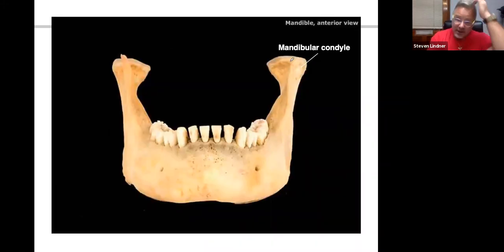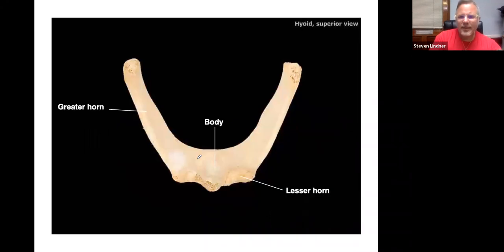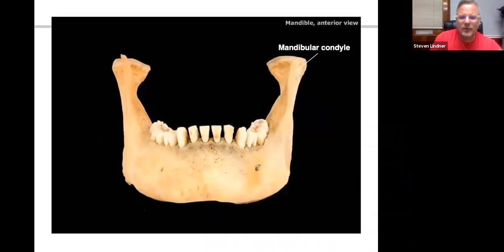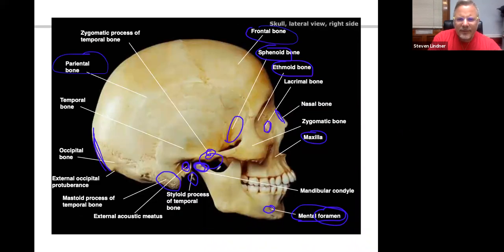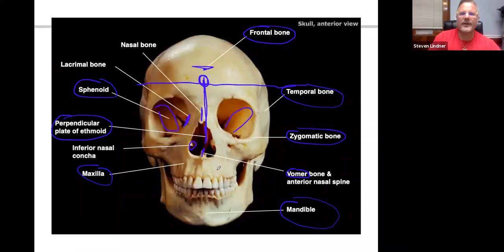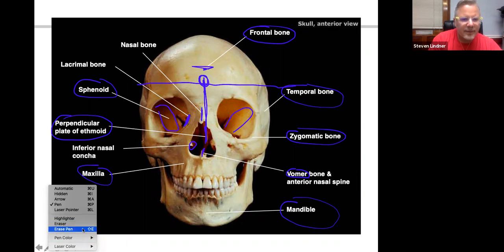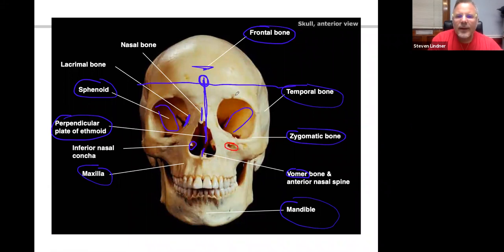Here is the mandibular condyle and the mandible. The two holes in the front are the mental foramina. I'll mark three locations with V1, V2, and V3 — the V is for Roman numeral five, the fifth cranial nerve, called the trigeminal nerve. Tri because it has three divisions: ophthalmic to the eye (V1), maxillary to the maxilla (V2), and mandibular to the mandible (V3).